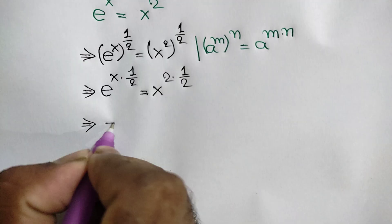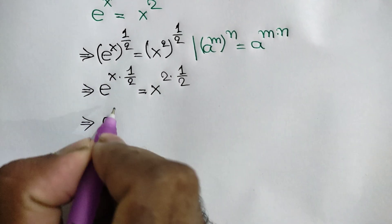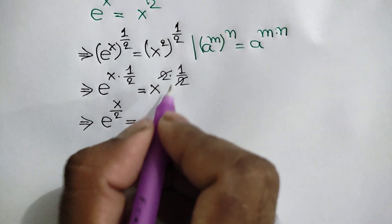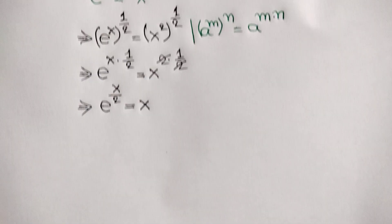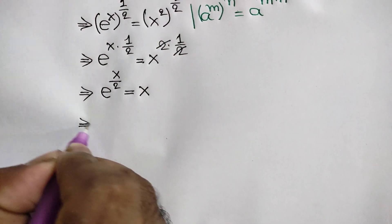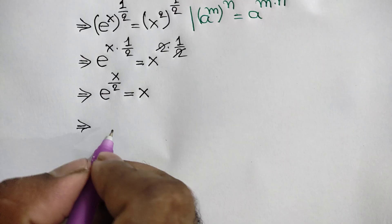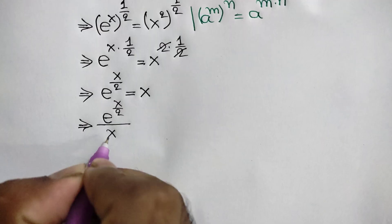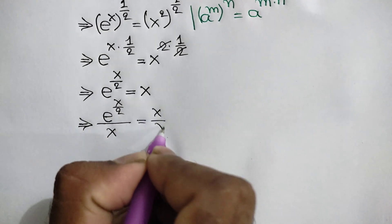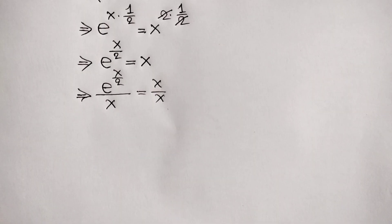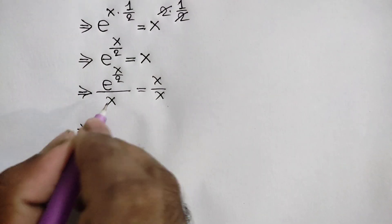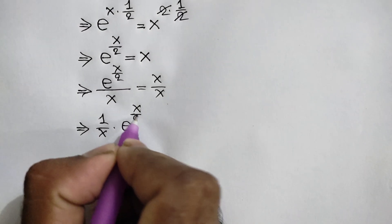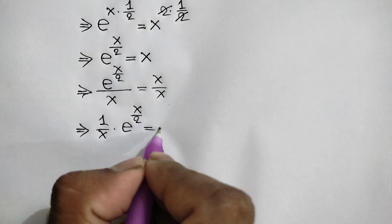Now here we will get e to the power x over 2 is equal to x. Dividing both sides by x, we can write e to the power x over 2 all over x is equal to x over x, or 1 over x times e to the power x over 2 is equal to 1.